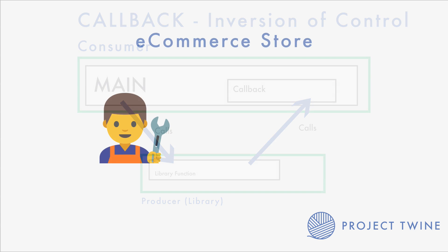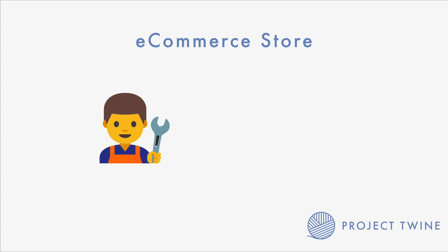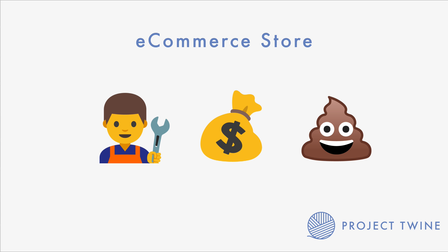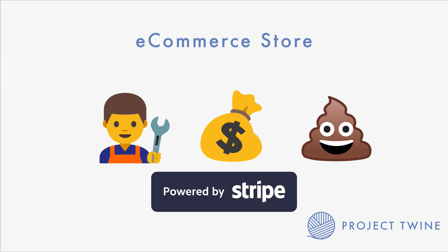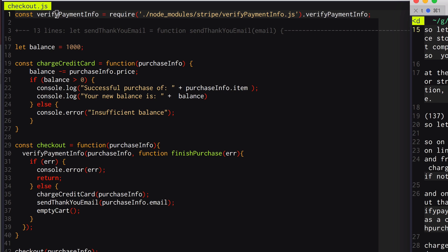Let's dive into an example to better illustrate this. Let's say that I'm an engineer for a sick e-commerce store — we're blowing up, we have tons of revenue, it's a hot company. But at the same time I heard about this really cool library from Stripe that will help me fix a problem that I've been having, and that is to verify payment information. So I want to go ahead and use that third-party library in my code.